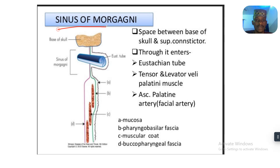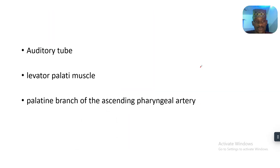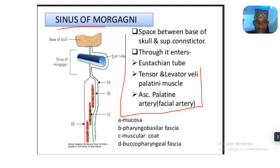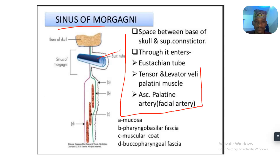These are the structures that pass through here. First of all, the auditory tube passes there — this is the auditory tube. And we have the levator palatine muscle.